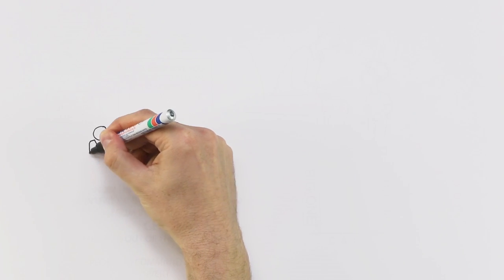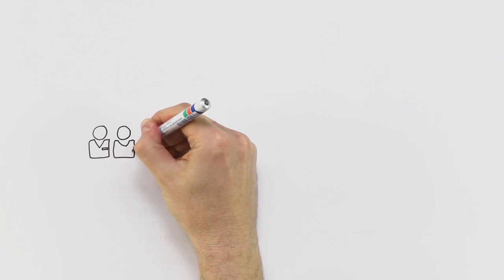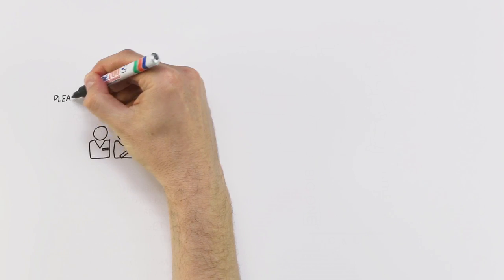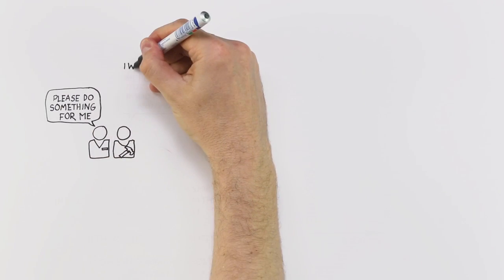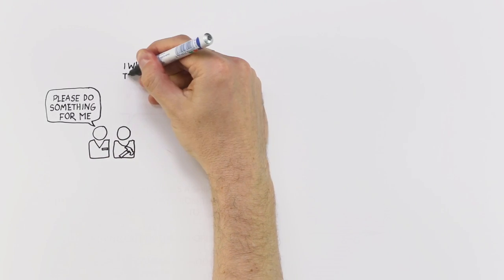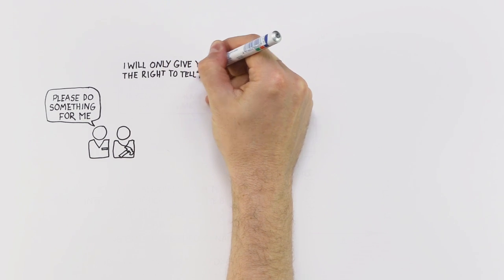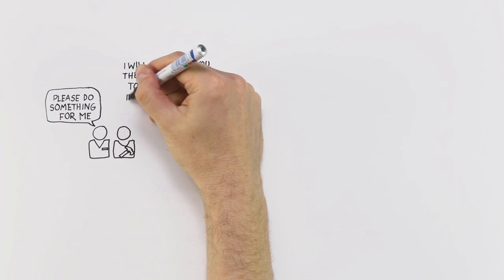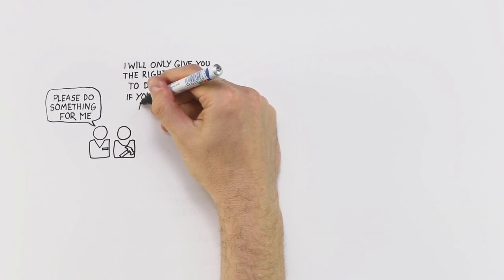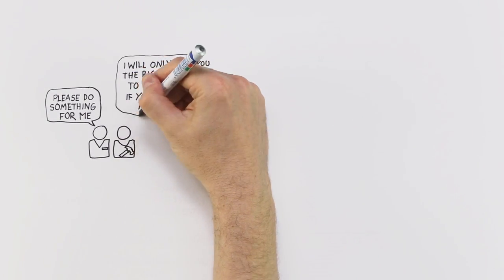If you work for somebody because you really want to, because they do all those things for you, if that person asks you to do something, you'll probably do it. Which means you give that person the right to ask you to do something, or to exercise power over you. Which suggests that these criteria of care and growth are the universal criteria for legitimate power.